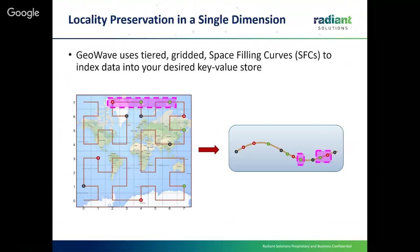We're not going to go too deep into how GeoWave does what it does — just giving you the overhead view. We use a tiered gridded space-filling curve to index all of your data. Basically you take a space-filling curve — in our case a compact Hilbert space-filling curve — put it over a gridded location, and each of the inflection points at the elbows becomes a location on what we essentially turn into a single-dimensional index. This is repeated through any number of dimensions you choose.